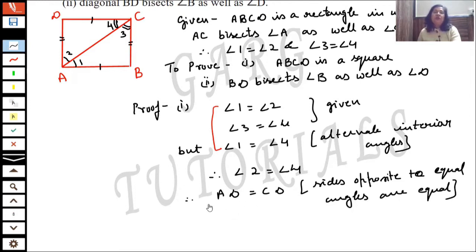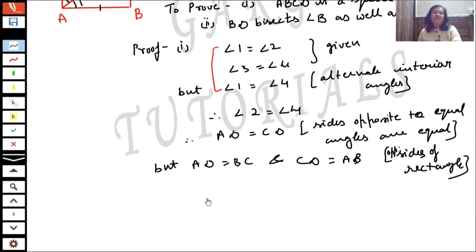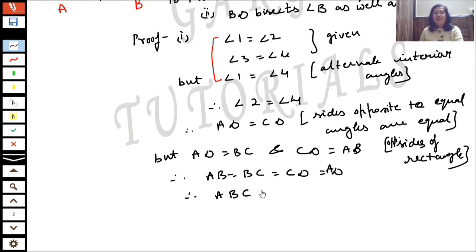When angle 2 equals angle 4, we get AD is equal to CD — sides opposite to equal angles are equal. But AD equals BC and CD equals AB (opposite sides of rectangle). So therefore AB = BC = CD = DA, and since all four sides are equal, ABCD is a square.